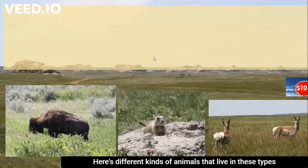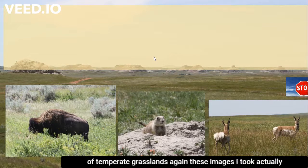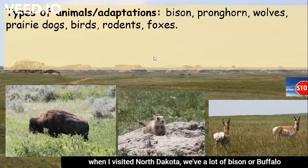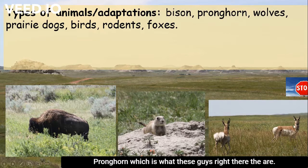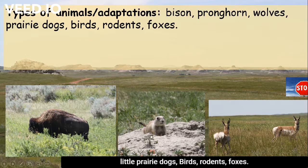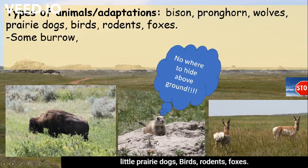Here are different kinds of animals that live in these types of temperate grasslands — images I took when I visited North Dakota. We have a lot of bison or buffalo, pronghorn (which is what these animals right there are), wolves, little prairie dogs, birds, rodents, and foxes.